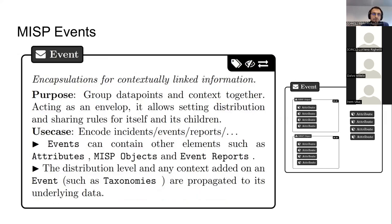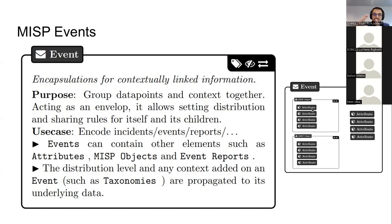We can also represent non-technical information in MISP — such as a person object where we would have attributes for first name, last name, and gender. MISP objects are a higher level structure to group attributes. Then we have what we call MISP events — containers that hold all information that are contextually linked. For example, an event would be an incident to encode in MISP or a daily report to encode. An event can contain multiple attributes and it can also contain multiple objects — it's really the big envelope that contains all the contextually linked data.